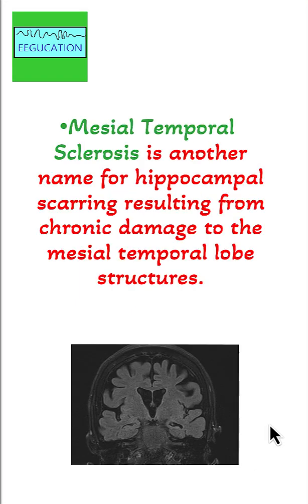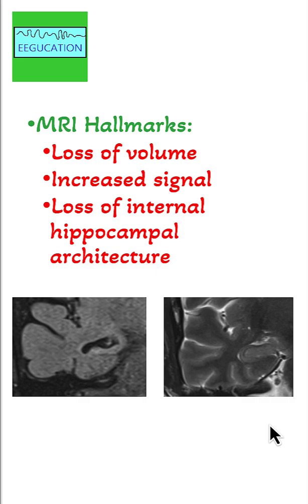Mesial temporal sclerosis is another name for hippocampal scarring resulting from chronic damage to the mesial temporal lobe structures. The MRI hallmarks include loss of volume, increased signal, and loss of internal hippocampal architecture, as you see in this slice here.